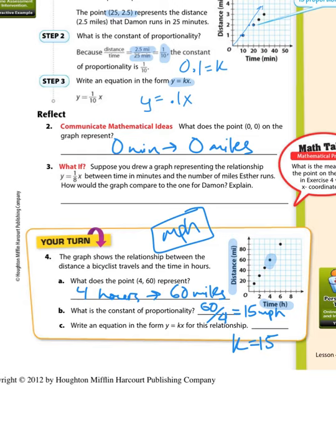So to write the equation, we would say y equals 15x. And then let's plug in some variables just to make sure it works. I noticed that point is at 4, 60. So if I plug in 60 equals 15 times 4, yep, we're good.